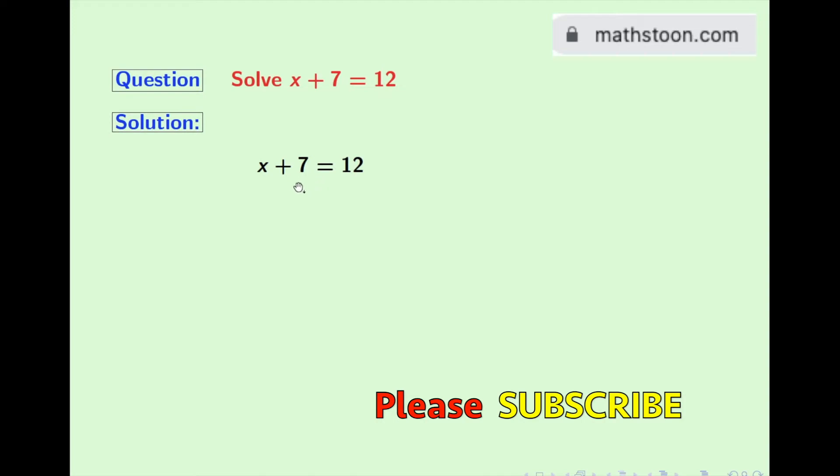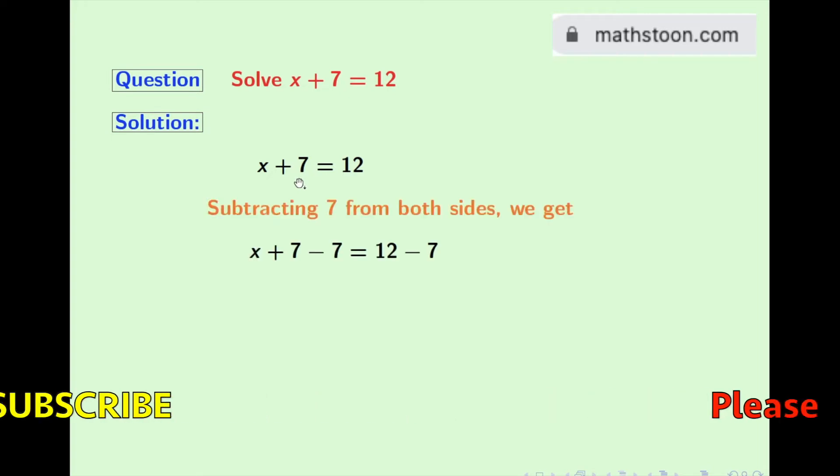To do that, we will subtract 7 from both sides. Doing that, we get x plus 7 minus 7 is equal to 12 minus 7.